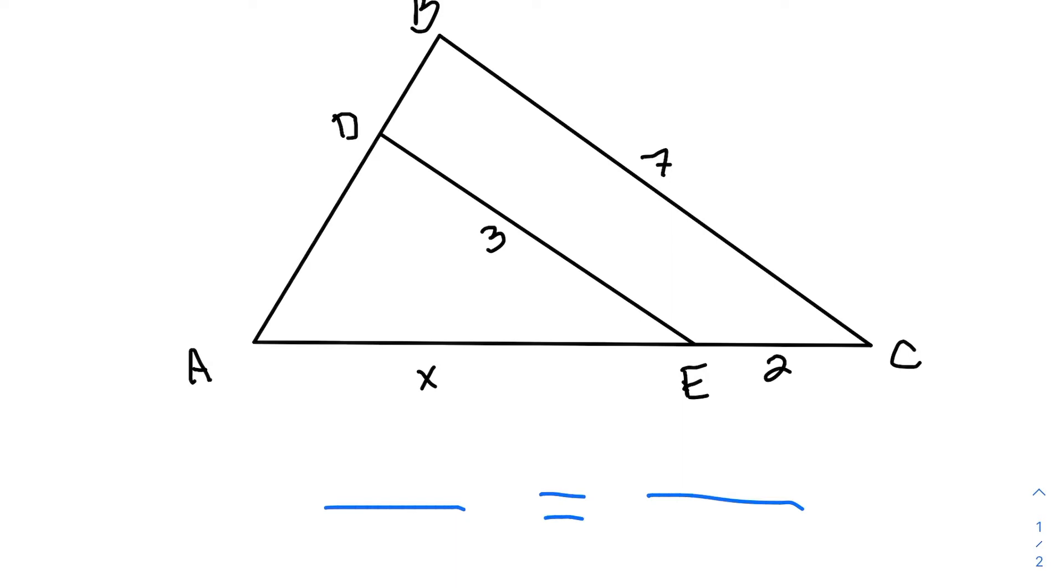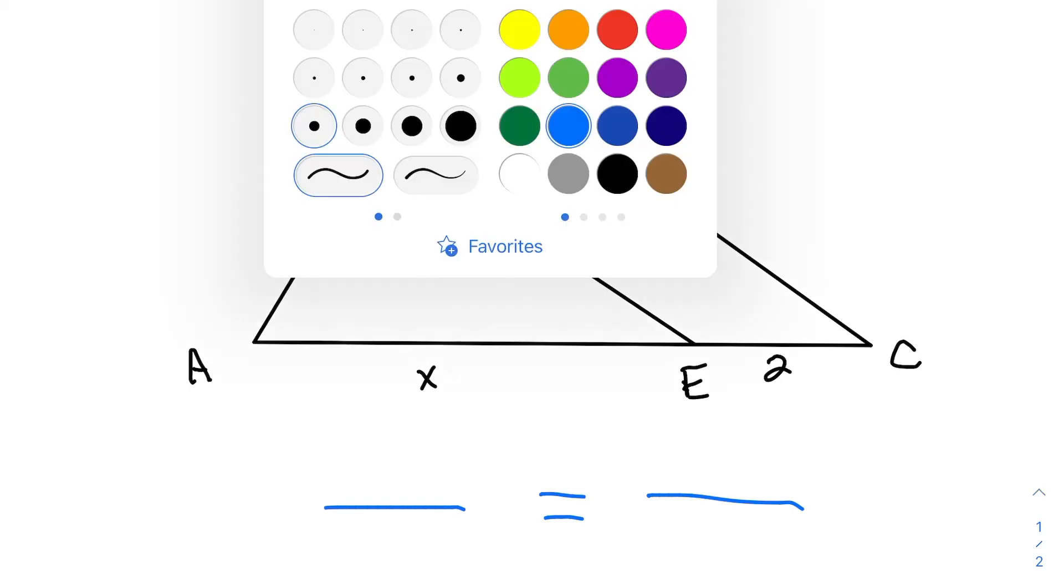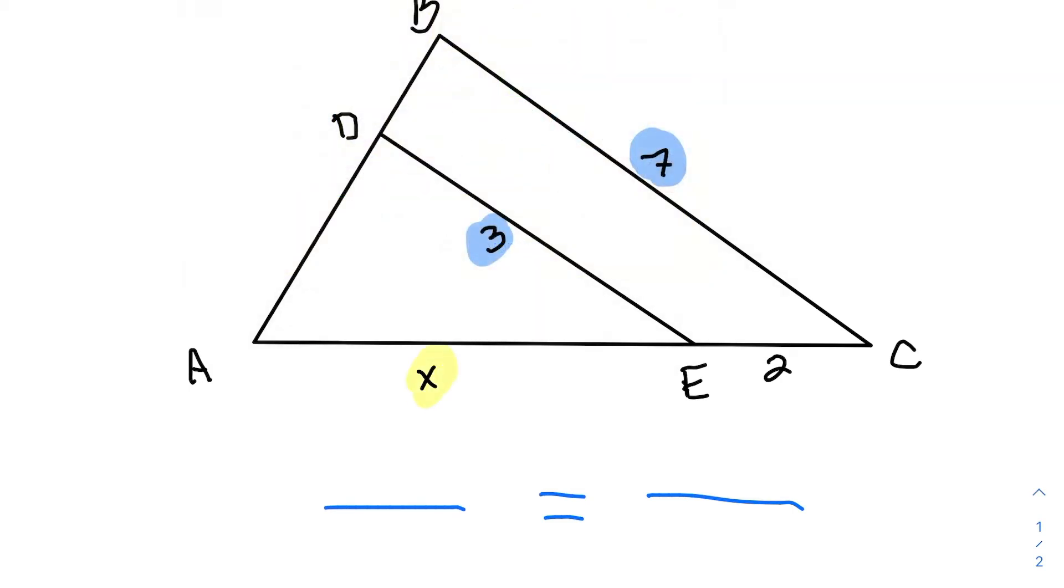So if we look at these triangles, the sides that correspond to each other, the three and the seven are corresponding sides. And then the X, and this is the hard part for a lot of students. So the X is going to correspond to this entire side AC, which would be the X and the two together.